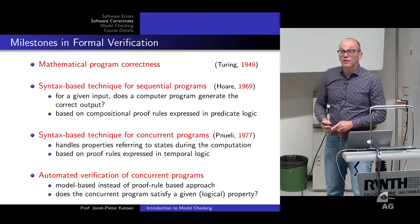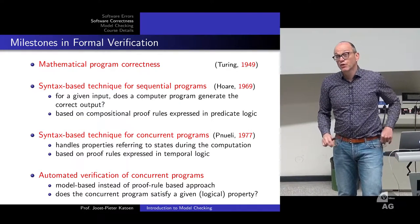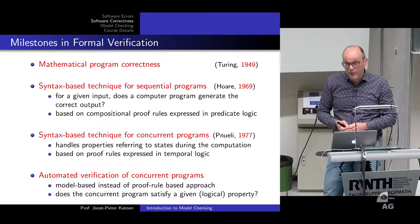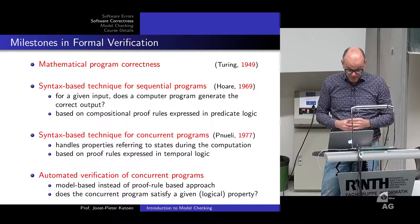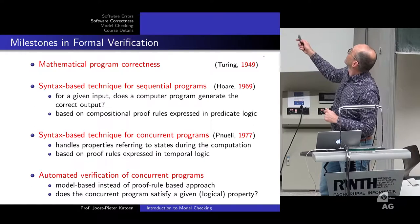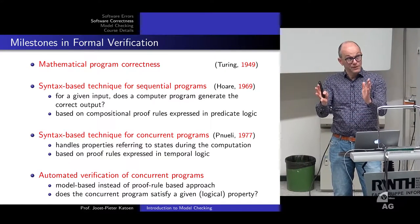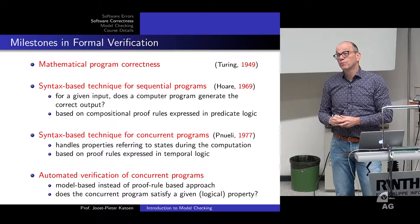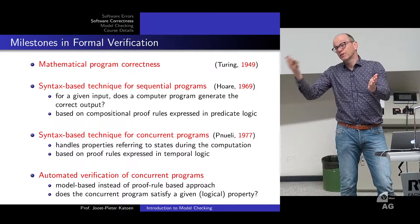Milestones in formal verification: the first paper mentioning the need for mathematical program correctness was by Turing, when programs were data flow diagrams. In the 60s, Floyd and Hoare developed syntax-based techniques. The idea: take program code, annotate it with preconditions, postconditions, and loop invariants, and prove that for every state satisfying the precondition, the program terminates and establishes the postcondition, using predicate logic — typically first-order logic. The core question: given certain input, does the program generate the correct output?